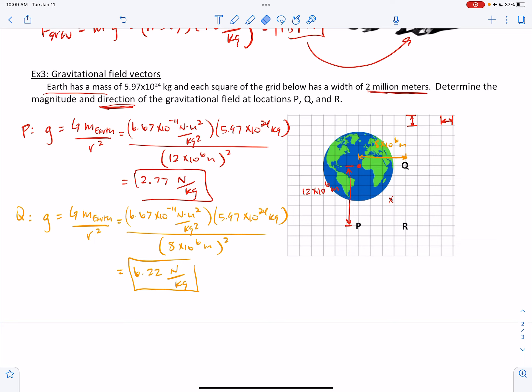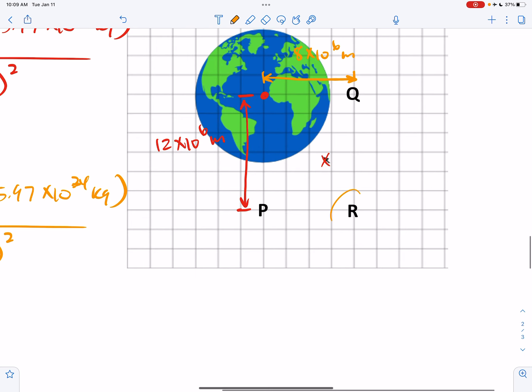Alright, now, finishing up at location R. Here's R out here in the corner. And I'm going to switch colors one more time. We need to know this distance from the center of Earth to R.